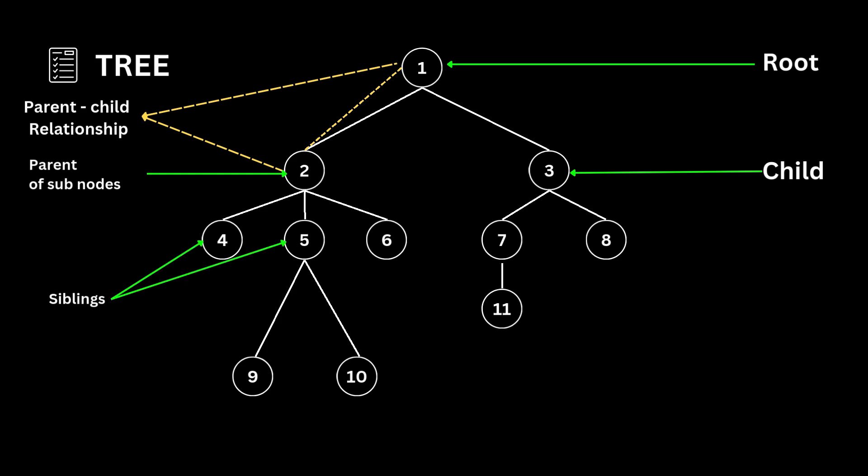Nodes that share the same parent are known as siblings. A node in a tree that does not have any child nodes is called a leaf node. It is the bottommost node of the tree. A general tree can have a number of leaf nodes, which are also known as external nodes. And a node that has at least one child is known as an internal node.